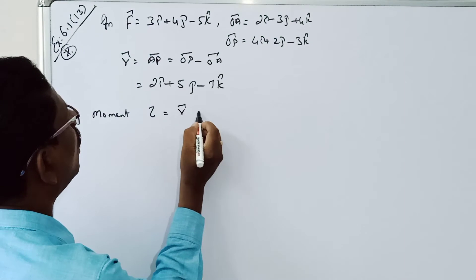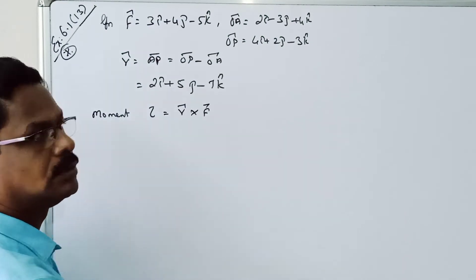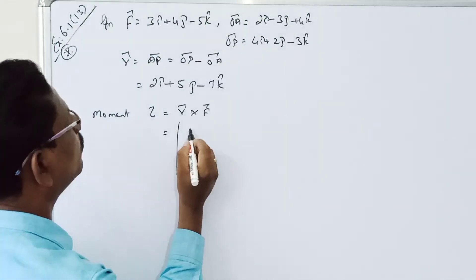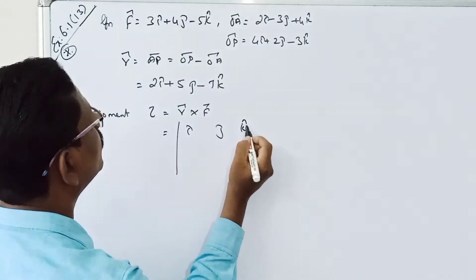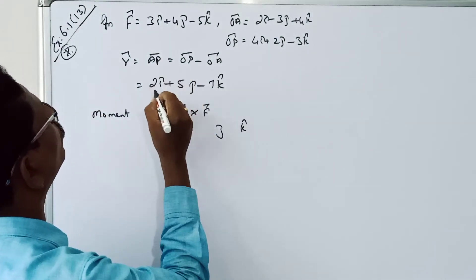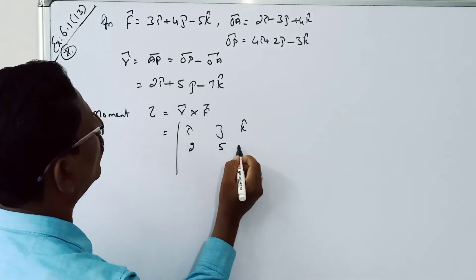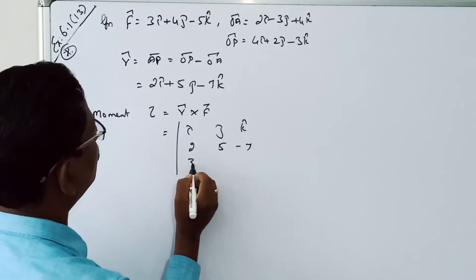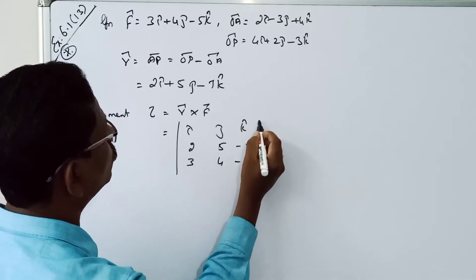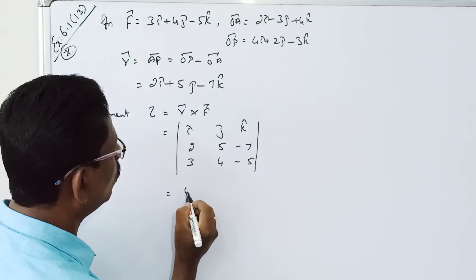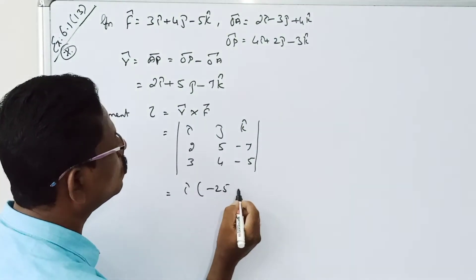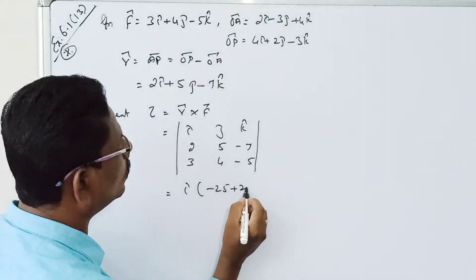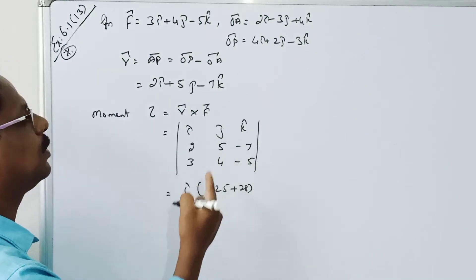Equal to r cross F. That is equal to determinant of i, j, k. r cross F: r is 2, 5, minus 7; F is 3, 4, minus 5. That is equal to i into minus 25 plus 28.